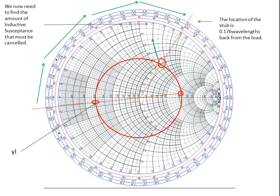Now we have to look at what value of susceptance we need to cancel. The arrow is drawn to 1.2, because drawing along the susceptance arc in the northern hemisphere — which is capacitive susceptance — gives us a value of 1.2. If we can cancel that out with equal but opposite polarity susceptance, we eliminate the reactive value and we'll be left with just the real value that matches the characteristic impedance of the line. So we have the position; now let's find the length of the stub. The susceptance value is 1.2, from the upper hemisphere of the Smith chart.